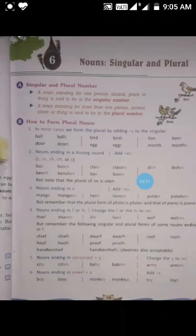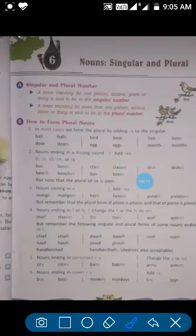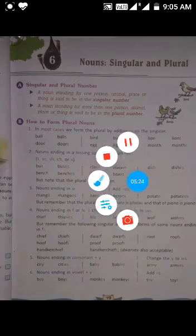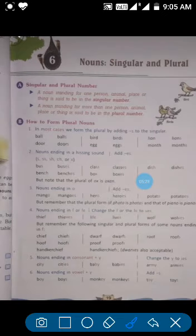Now we will study rule number five. In this rule, any noun that ends in Y, and before Y there is a consonant - you all know about vowels and consonants - if there is a consonant before Y, then what do we add? We change Y to IES. For example, baby. In baby, Y is at the end, but before Y there is B which is a consonant. So we change Y to IES, meaning baby becomes babies.